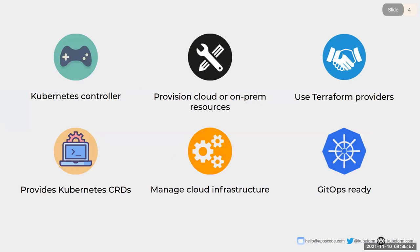KubeForm provides Kubernetes CRDs for Terraform resources so that you can manage any cloud infrastructure in a Kubernetes-native way. KubeForm is built on Terraform — a massive technology — so you can rely on KubeForm as much as you rely on Terraform. You just write a CRD for your cloud infrastructure, then apply it and KubeForm will create the cloud resources for you. It is GitOps-ready: you can store your custom resources in a Git repo and use a CI/CD pipeline like GitHub Actions to automate infrastructure management.